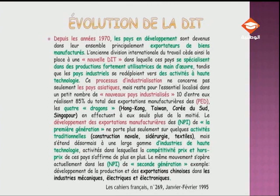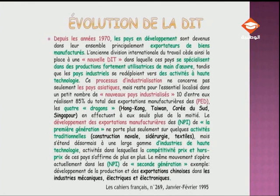Dix pays réalisent 85% du total des exportations manufacturières des PED. Les quatre dragons, à savoir Hong Kong, Taïwan, Corée du Sud et Singapour, en effectuent à eux seuls plus de la moitié. Le développement des exportations manufacturières des NPI de la première génération ne porte plus seulement sur des activités traditionnelles telles que les constructions navales, la sidérurgie et les textiles, mais s'étend désormais à une large gamme d'industries de haute technologie. Le même mouvement s'opère dans les NPI de seconde génération, par exemple le développement de la production et des exportations chinoises dans les industries mécaniques, électriques et électroniques.